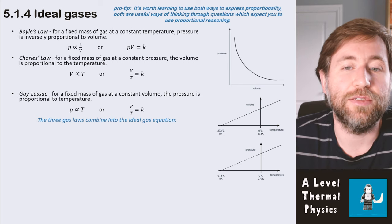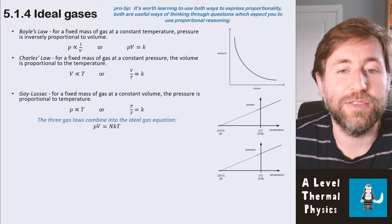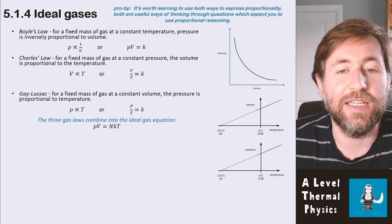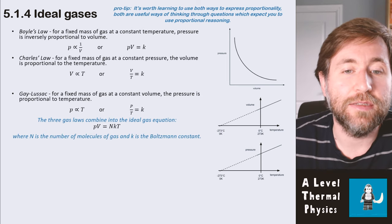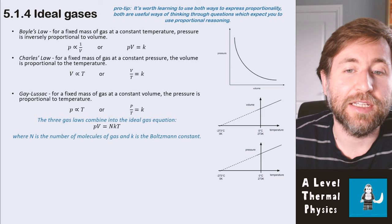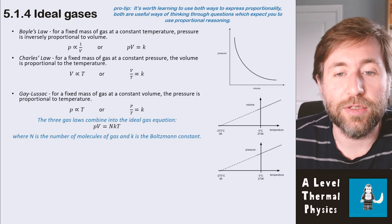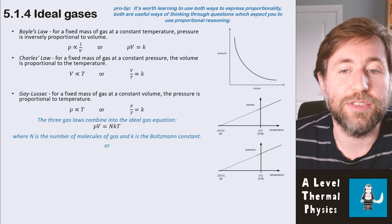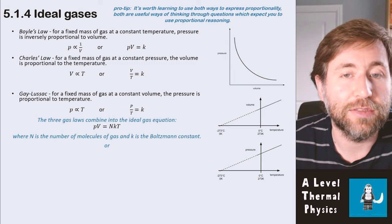You can combine these three gas laws to give you the ideal gas equation, and that is PV = NkT. Pressure times volume is the number of molecules of a gas multiplied by the Boltzmann constant, multiplied by the absolute temperature. There's two ways to write this equation though. There's that first one.